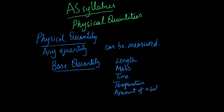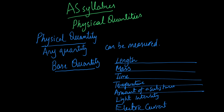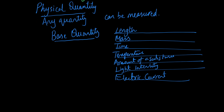Continuing the list of base quantities: amount of substance, light intensity, and electric current. Let me make a table for you. The unit for length is metre, mass is kilogram, time is second, temperature is kelvin (capital K), amount of substance is mol, light intensity is candela (cd), and electric current is ampere.